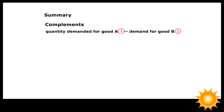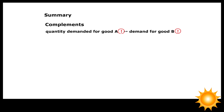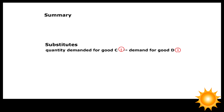To summarize: for complements, when the quantity demanded for good A goes up, demand for good B goes up; when quantity demanded for good A goes down, demand for good B goes down. For substitutes, when the quantity demanded for good C goes up, demand for good D goes down; when quantity demanded for good C goes down, demand for good D goes up.